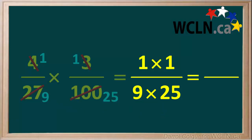Now we can multiply the pairs in the numerator and the denominator to give us a simpler fraction. In the numerator, 1 times 1 is equal to 1. And in the denominator, 9 times 25 is equal to 225. So our final answer is the fraction 1 over 225 or 1/225.